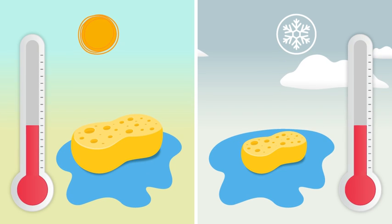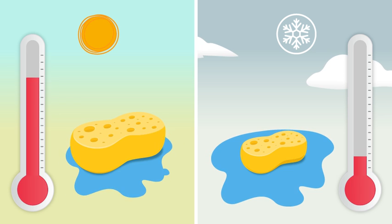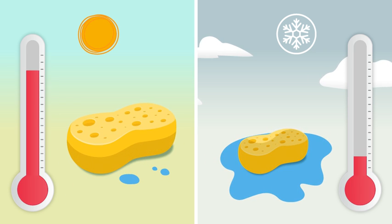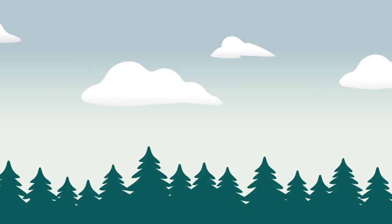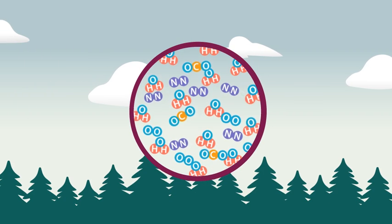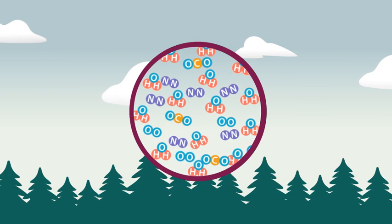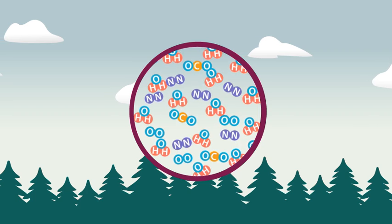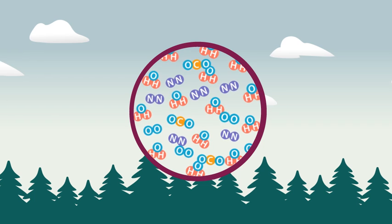Air is like a sponge for water. The warmer the air, the more the sponge can potentially hold. The colder the air, the less the sponge can potentially hold. Unlike a sponge, the moisture in the atmosphere is usually in the form of water vapor, floating around just like any other gas in the atmosphere.